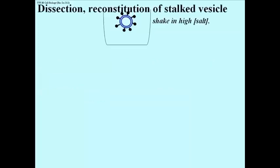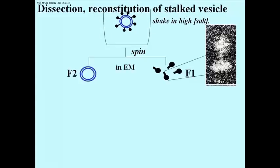Finally, Racker's lab was able to dislodge these lollipop particles from the membranes by shaking them in a high salt concentration solution. The remaining smooth vesicles moved to the bottom of the centrifuge during a spin while the stalked particles remained suspended. A single isolated stalked particle can be seen in the electron micrograph on the right in this slide.